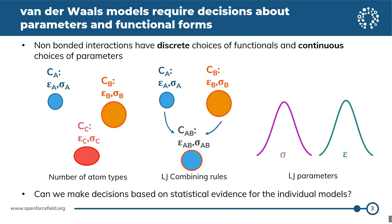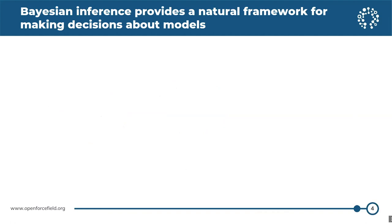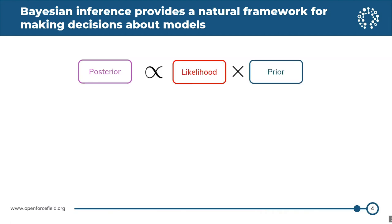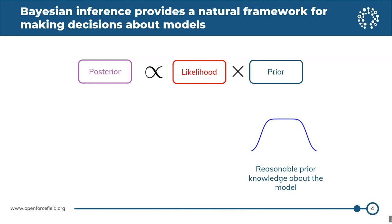The technique we're interested in using is called Bayesian inference. Bayesian inference provides a natural framework for making decisions about models. We look at posterior distributions, which are a combination of a likelihood distribution and a prior distribution. A prior distribution is your reasonable knowledge about the model before you perform your experiments. If you haven't studied the model before, you might put a flat prior; if you have, you might have a more peaked prior.